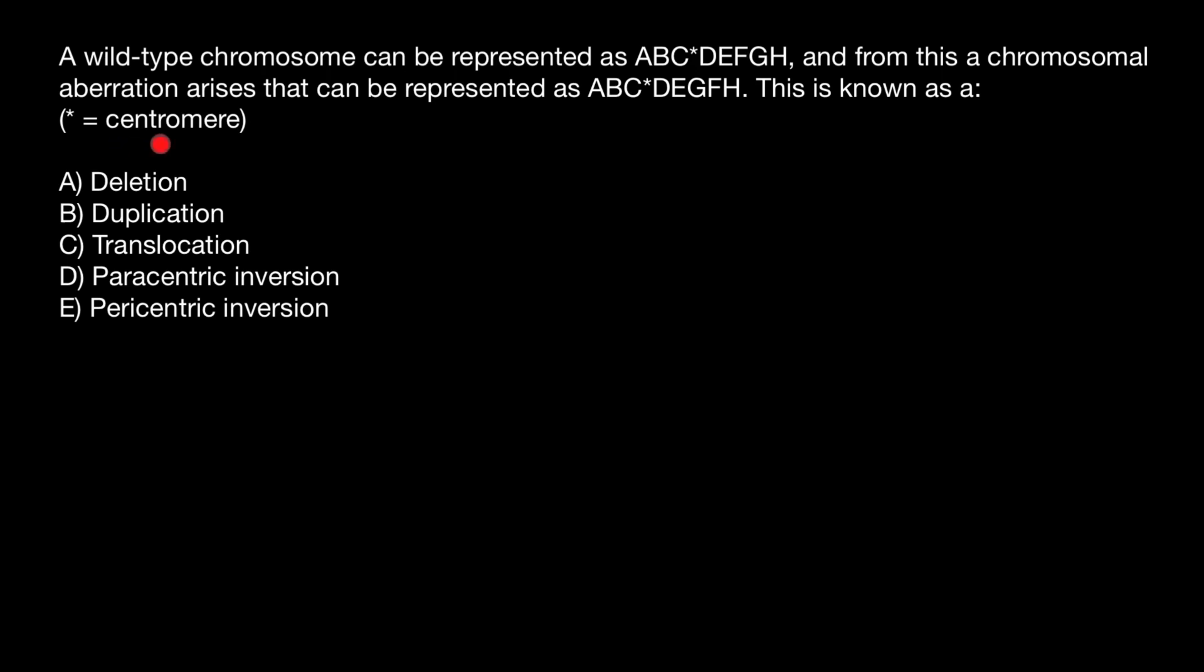An asterisk here means centromere. There is a science called cytology, which describes and studies such aberrations on the chromosomal level. Let's take a closer look. Here is the sequence: A, B, C, centromere D, E, F, G, H.